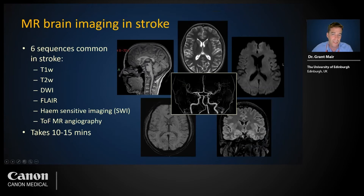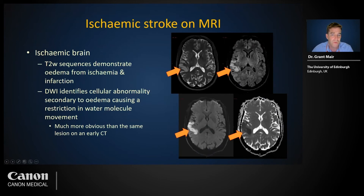MR brain imaging for stroke commonly includes six standard sequences to identify ischemic brain changes, hemorrhage, and arterial obstruction. Since each sequence must be acquired independently, the whole process can take over 10 minutes. On MRI, ischemia appears bright on T2-based sequences, but these appearances rely on a net water increase and only become visible after a few hours. Diffusion-weighted imaging (DWI) and its ADC counterpart are sensitive to cytotoxic edema — the very earliest change before any net water gain — so DWI abnormalities are clearly visible within the first few minutes after ischemic stroke onset.